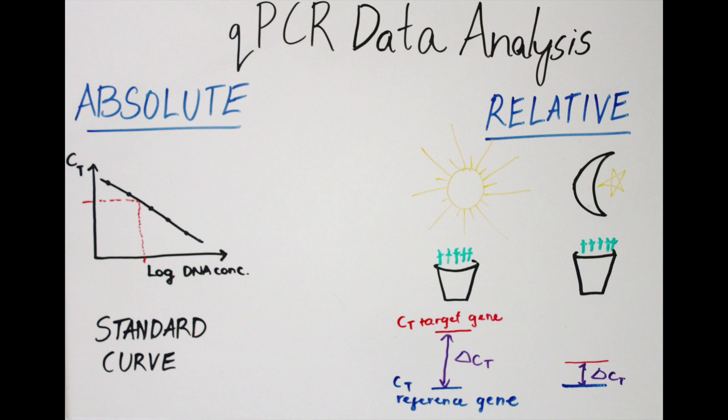In conclusion, there are two ways to quantify transcripts using qPCR: absolute quantification using a standard curve and relative quantification using a reference gene. The method used depends on whether you want to determine the actual number of transcripts or the relative change in gene expression.